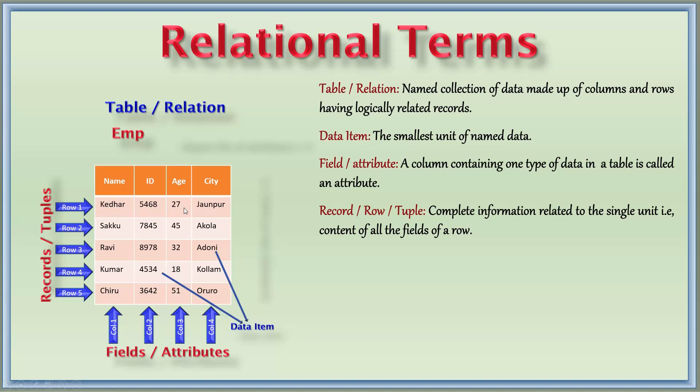This is a field, this is a field, this is a field, and this is a field. All four fields together are called a row, which gives a particular detail of a man. See here, Kedar, his ID, his age, and then his city.